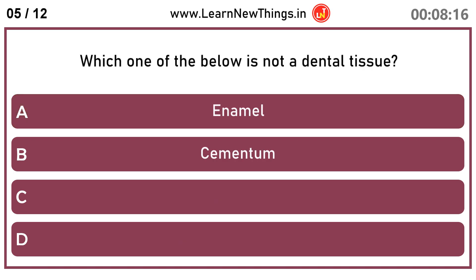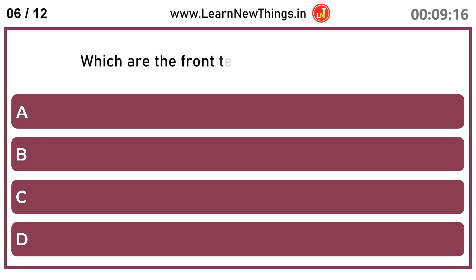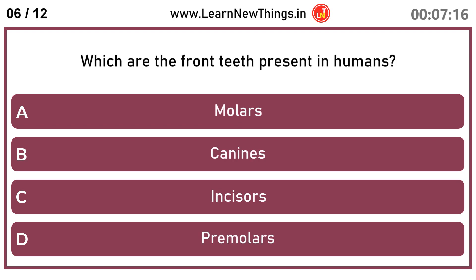Which one of the below is not a dental tissue? Gingiva. Which are the front teeth present in humans? Incisors.